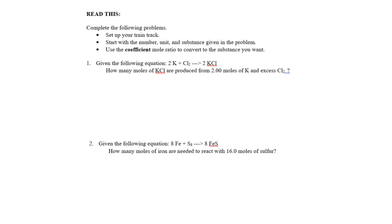The problems on this page, questions one through eight, are all set up exactly the same way. We are just doing one conversion — no different than going from legs to tables or tables to tops. You're always going to follow these steps: set up your train track, start with the number, unit, and substance. Now we're adding substance to the mix. Then we use the coefficient ratio from the balanced chemical equation to convert from one substance to the other.